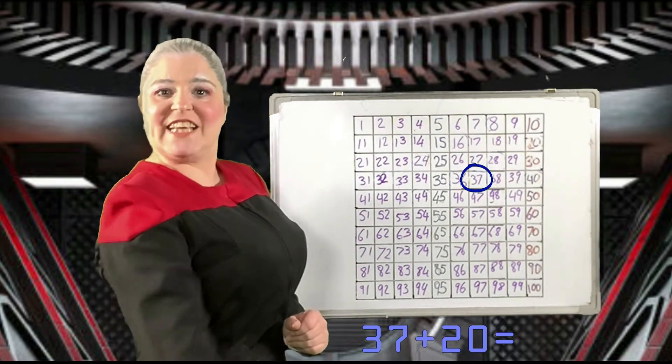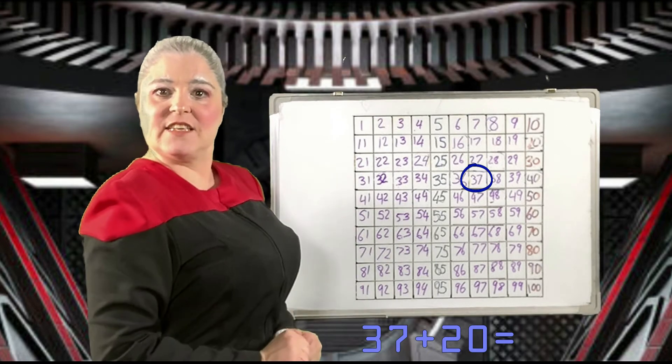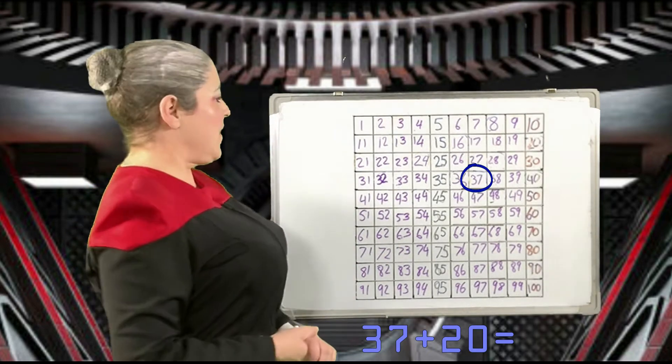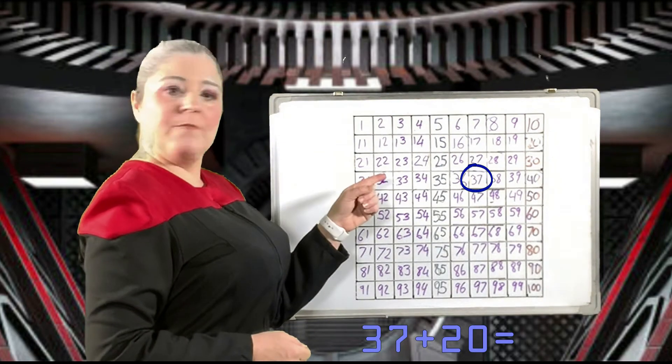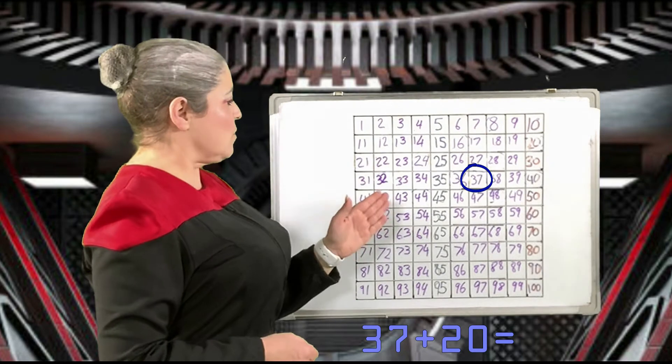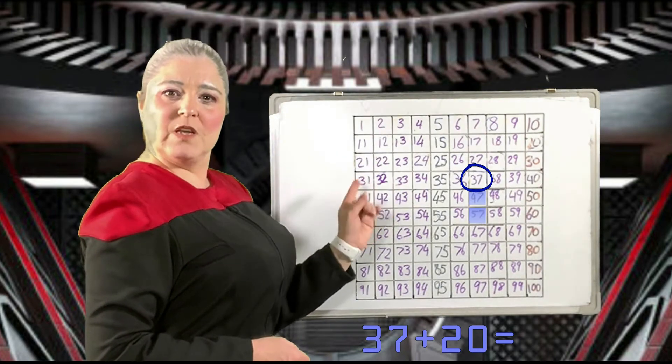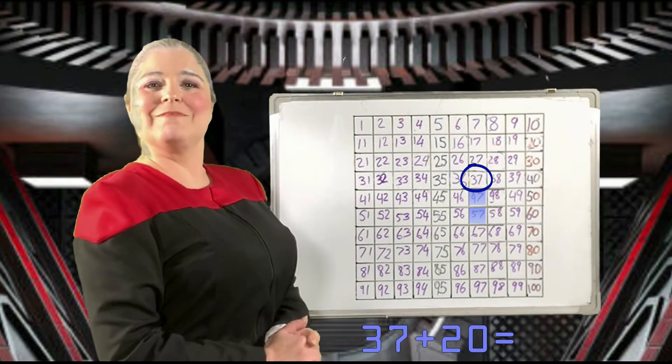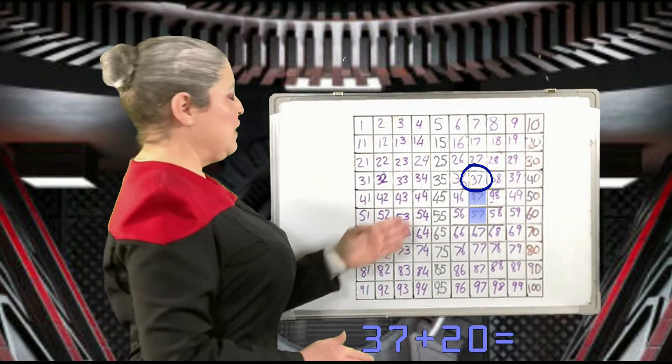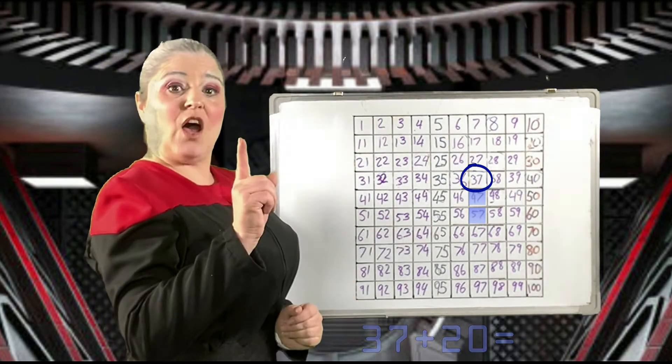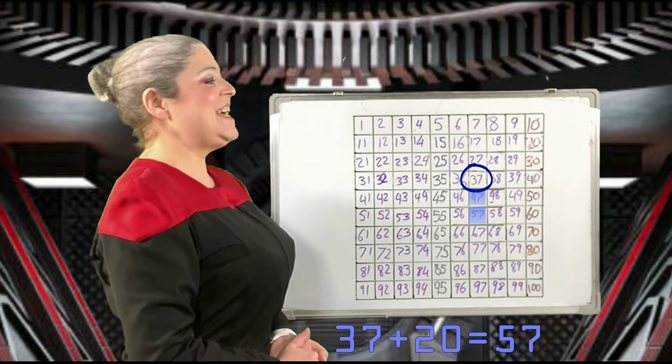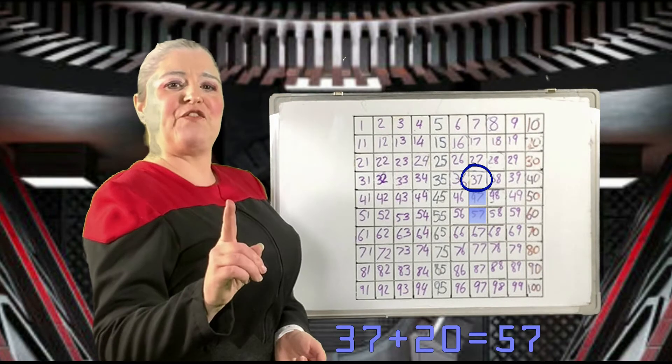Now, the number 20 has two tens in it. So we need to move two squares down the number square. We start at 37 and we move two squares down: one, two. We've landed on the number 57. So, 37 plus 20 is 57.